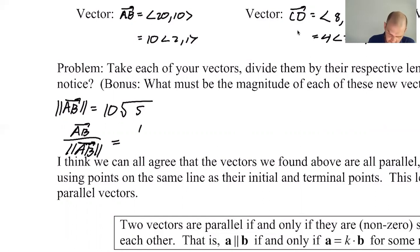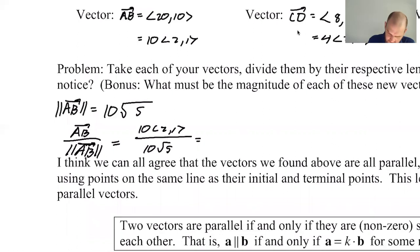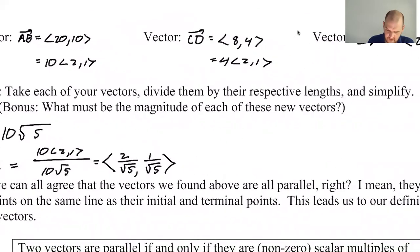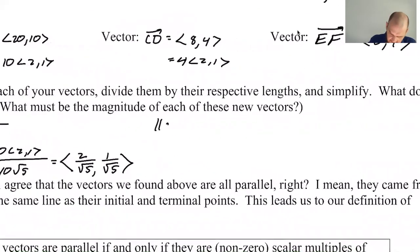If I do AB divided by the magnitude of AB, I'm going to get 10<2,1> divided by 10 root 5, which is 2 over root 5, 1 over root 5. The magnitude of CD is just going to be 4 times the magnitude of <2,1>, so 4 root 5.